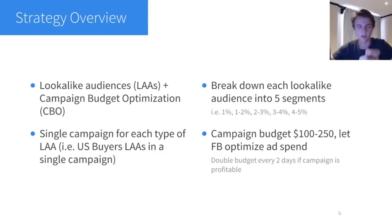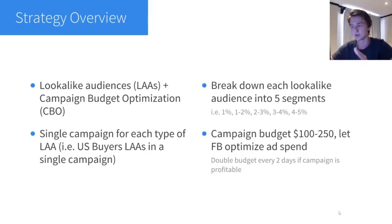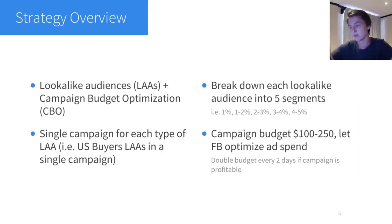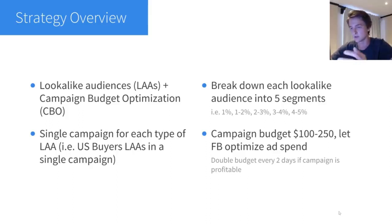You want to break down each lookalike audience into five segments: 1%, 1–2%, 2–3%, 3–4%, and 4–5%. This avoids overlap and lets CBO test and optimize across the different levels. You can also do 2% increments — 2%, 2–4%, 4–6%, 6–8%, 8–10% — if you're targeting a country with a smaller population. Set a budget of about $100–$250 to start, let it run, and every two days if the campaign is profitable, double the budget.